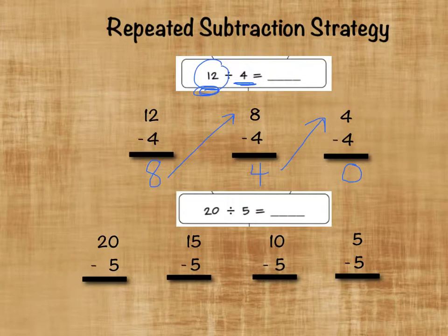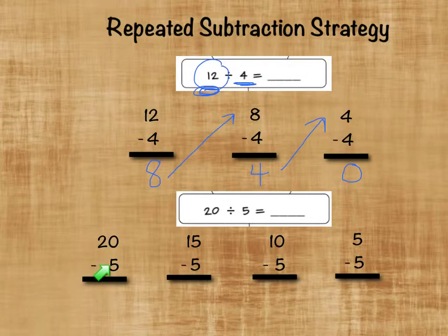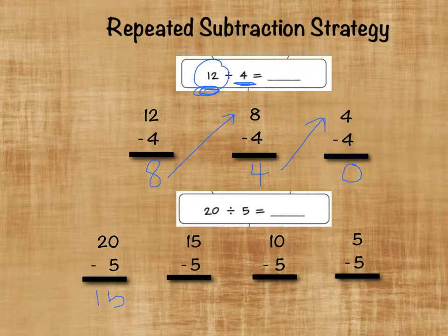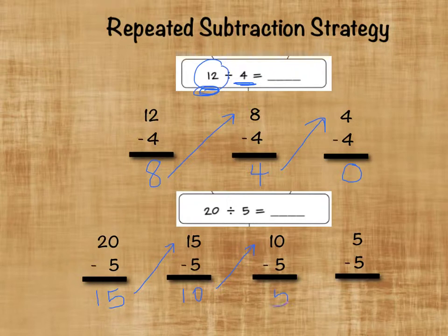Let's look at this one. 20 divided by 5 equals something. So we're going to take 20, which is the dividend, and subtract 5, which is the divisor, as many times as we need to until we get to 0. So let's do that together. 20 minus 5 is 15. We're going to take that 15, put it at the top, and subtract 5 again. 15 minus 5 is 10. Put it up here — 10 minus 5 is 5. And 5 minus 5 is 0.